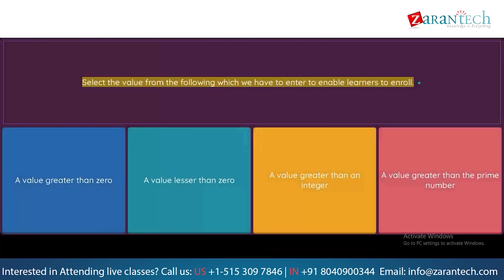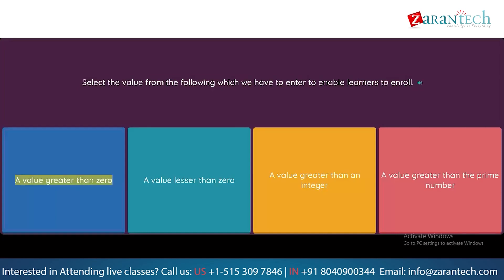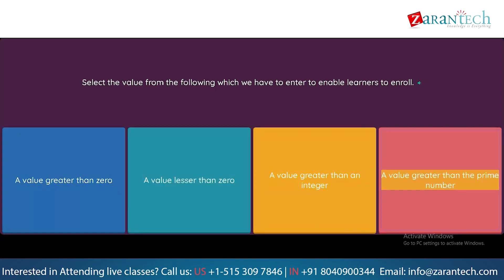Question: Select the value from the following which we have to enter to enable learners to enroll. Option 1: A value greater than zero. Option 2: A value lesser than zero. Option 3: A value greater than an integer. Option 4: A value greater than the prime number.